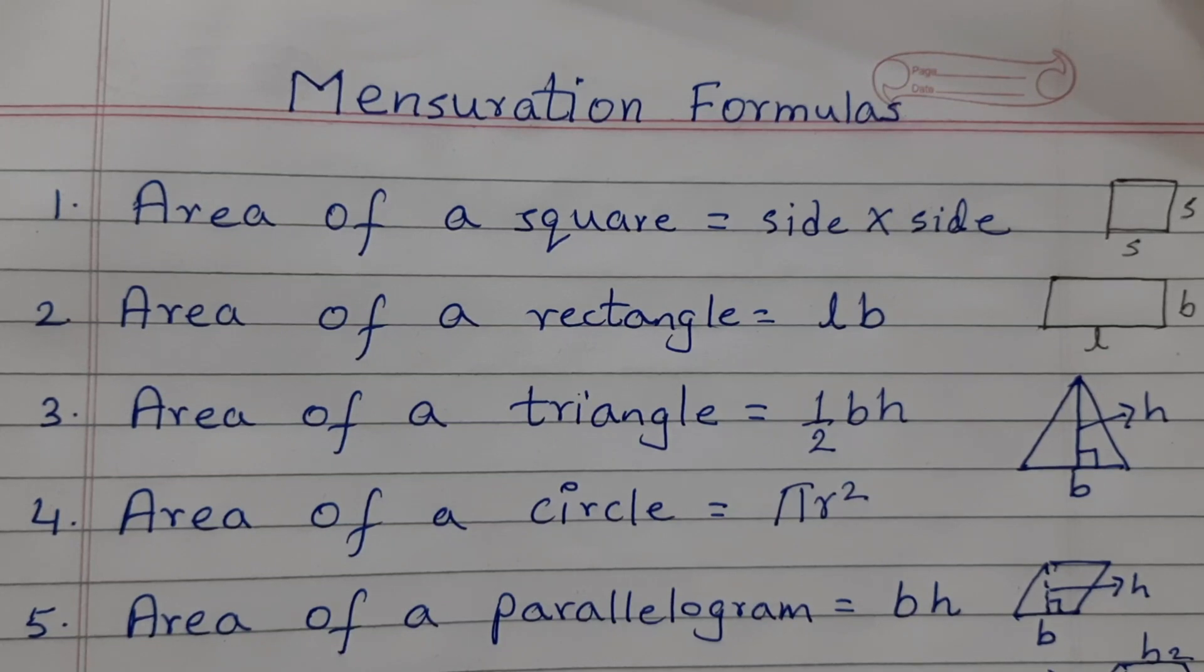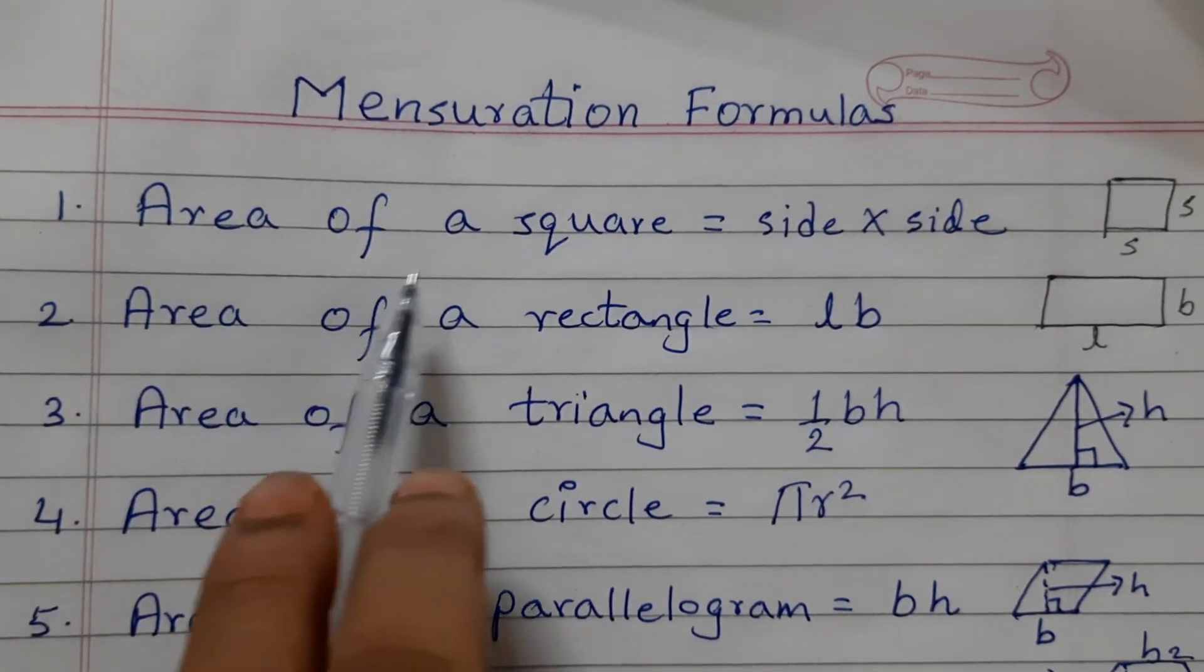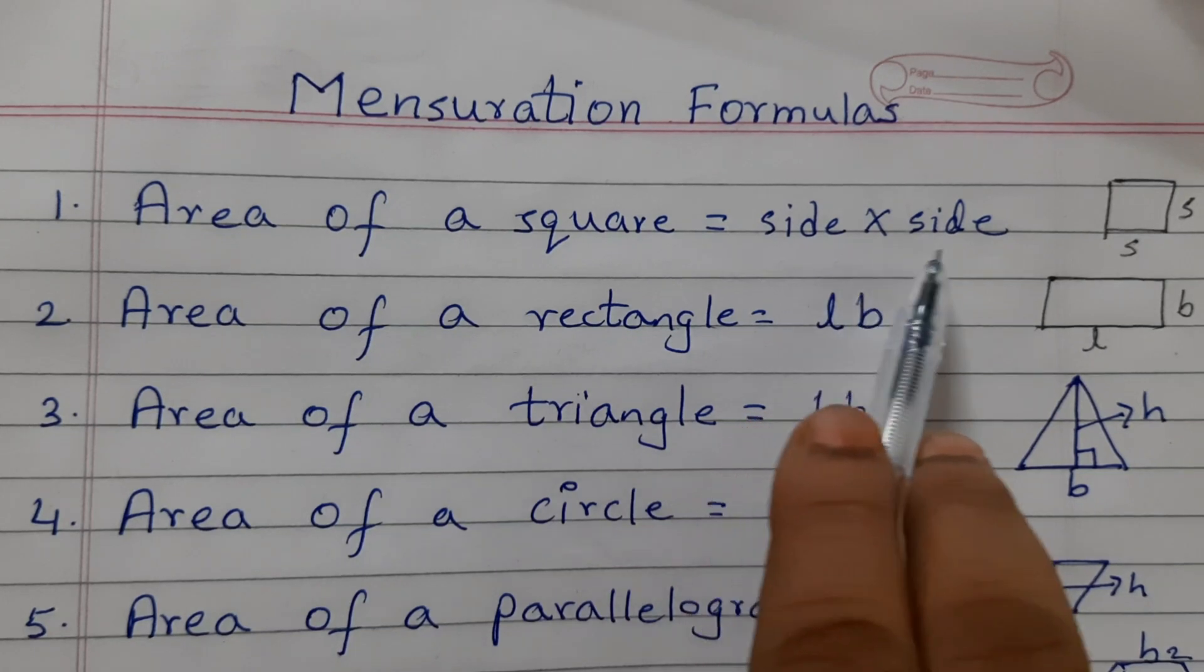Hello students, in this video we shall go over the important formulas of the chapter mensuration. Area of a square is equal to side into side.